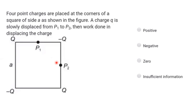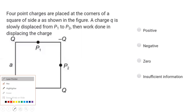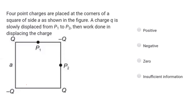Then the work done — is it positive, negative, or zero? To find the work done, we need to ask: what is the potential difference? Work done is equal to the charge times the potential difference.